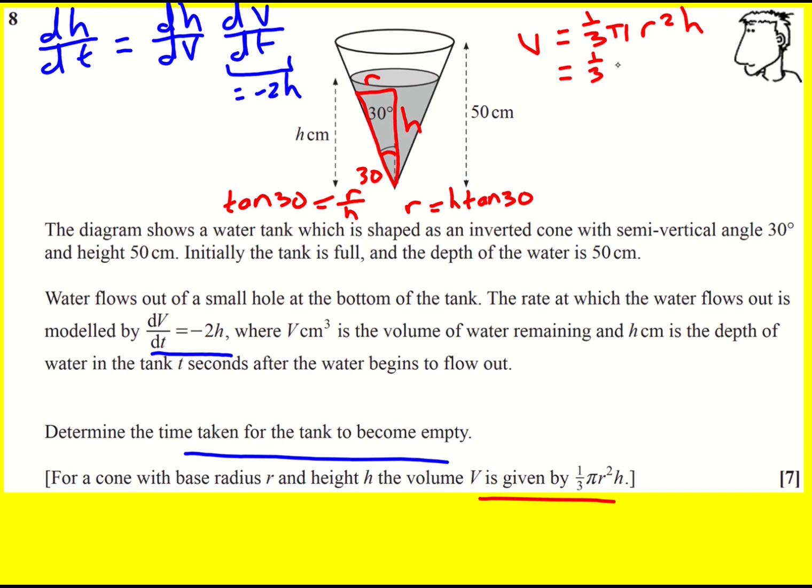So the volume becomes one third pi H squared times - let me just write that down. So it's going to be H over root 3, which means R squared is going to be H squared over 3. That makes it a bit easier now to just put it in. So I can just put it in actually. And it's going to become one over nine pi H cubed. That is much better. Now I can find dV by dH very quickly.